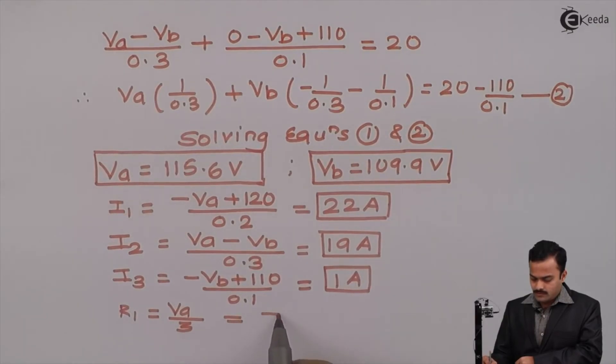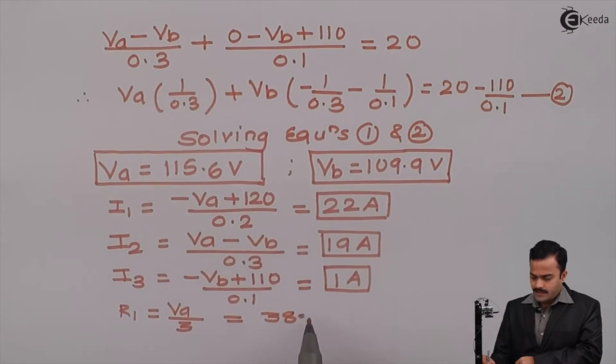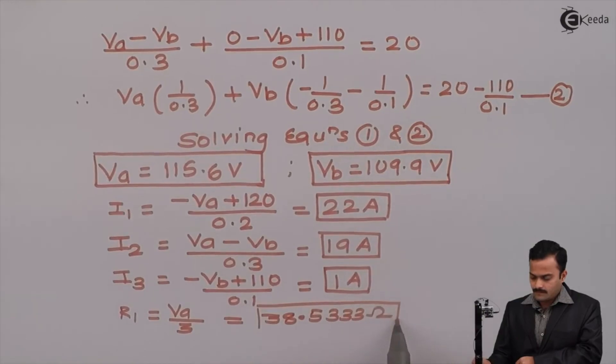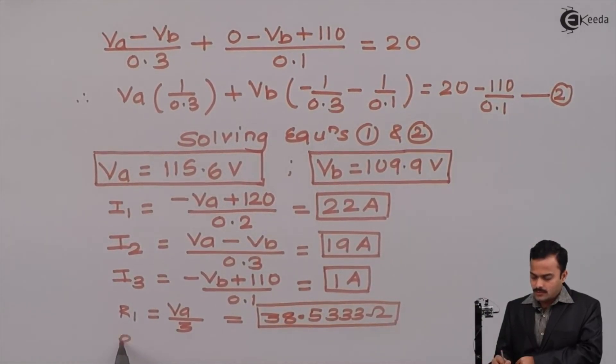Vb. So, this is equal to 38.5333 Ohm. Similarly, R2,